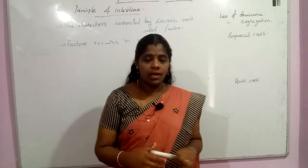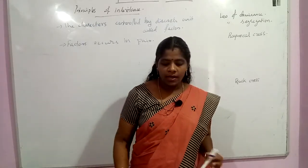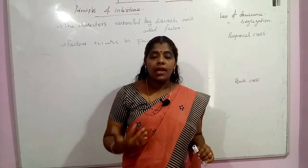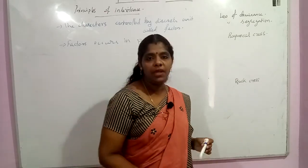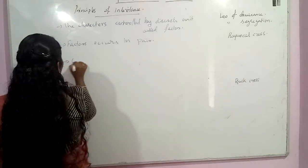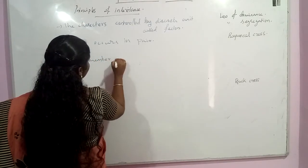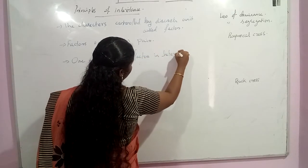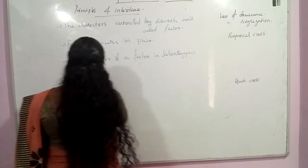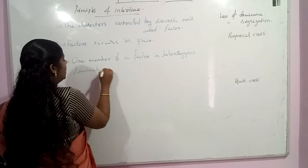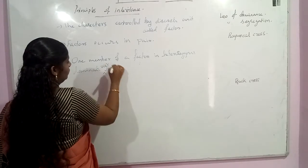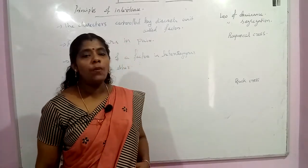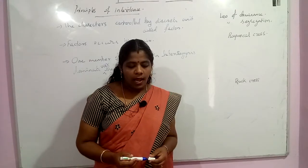In a dissimilar factor pair, one member of the pair dominates over the other. In a hybrid or dissimilar factor combination, in the heterozygous condition, one member dominates over the other. This is called the law of dominance.